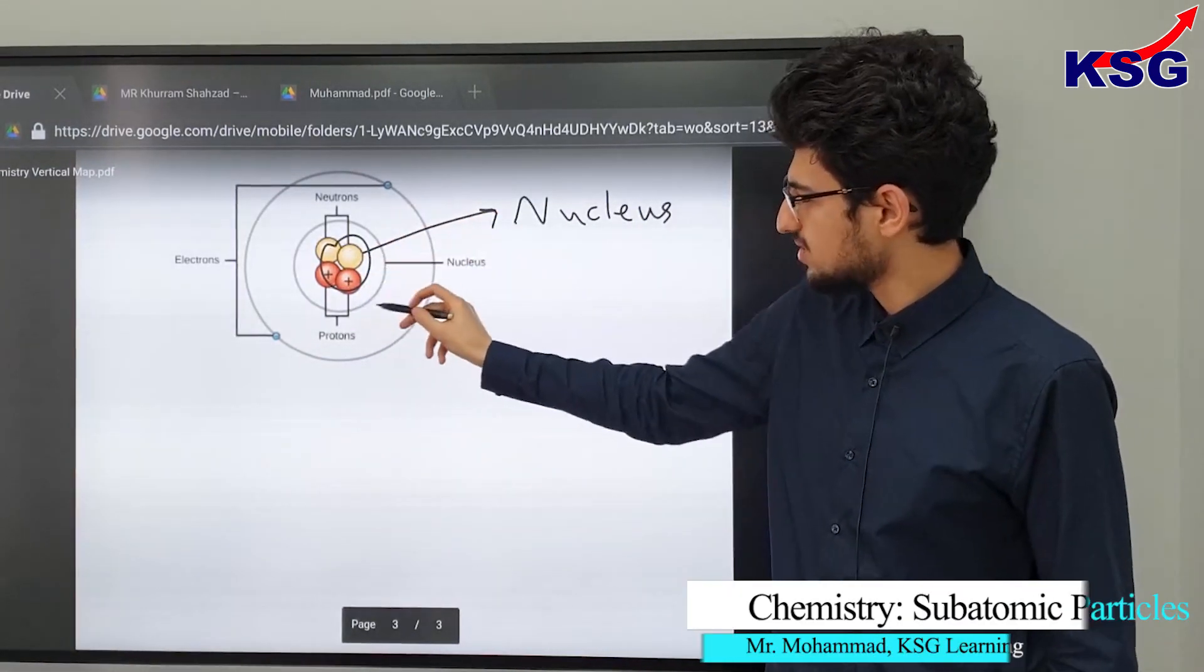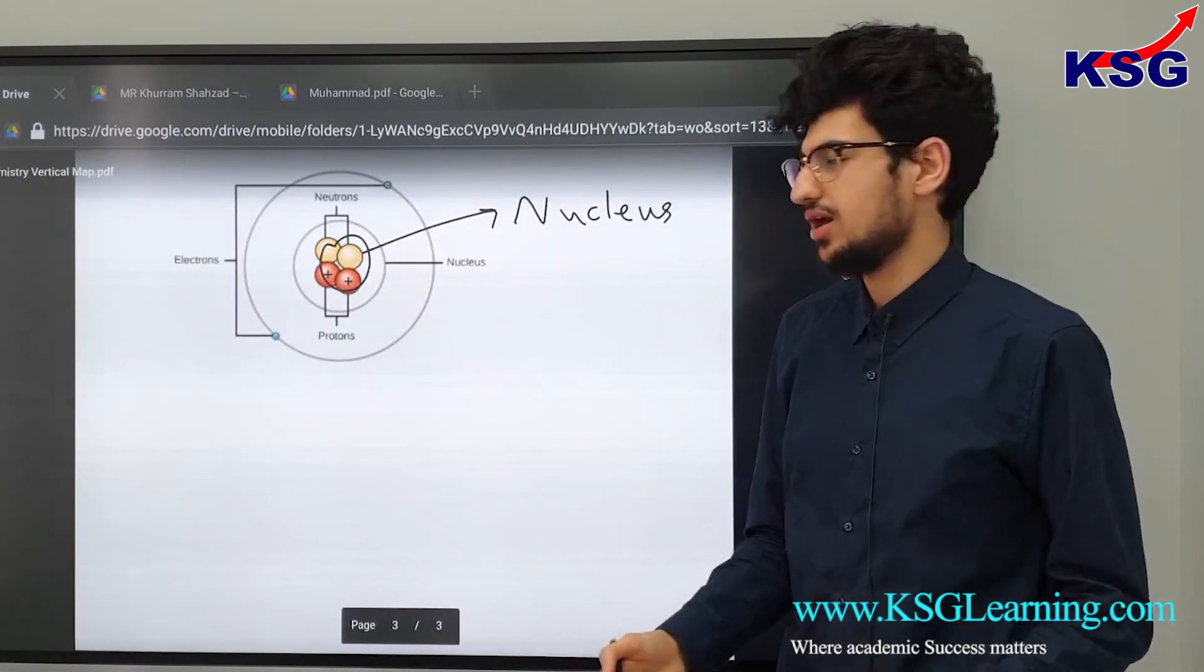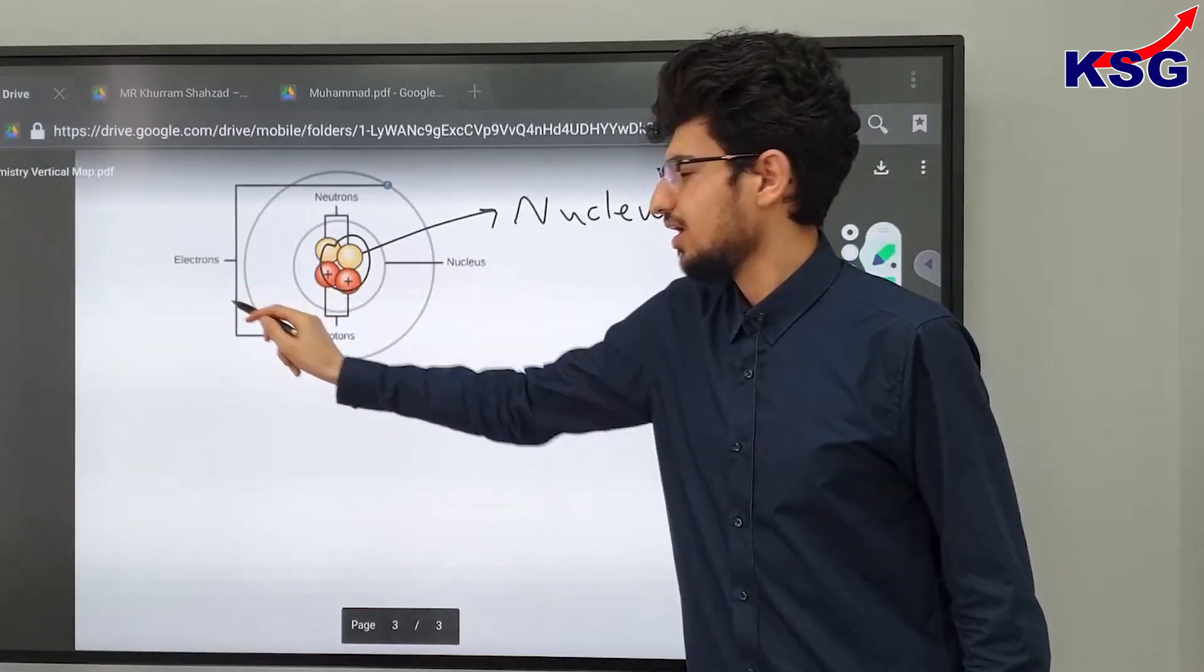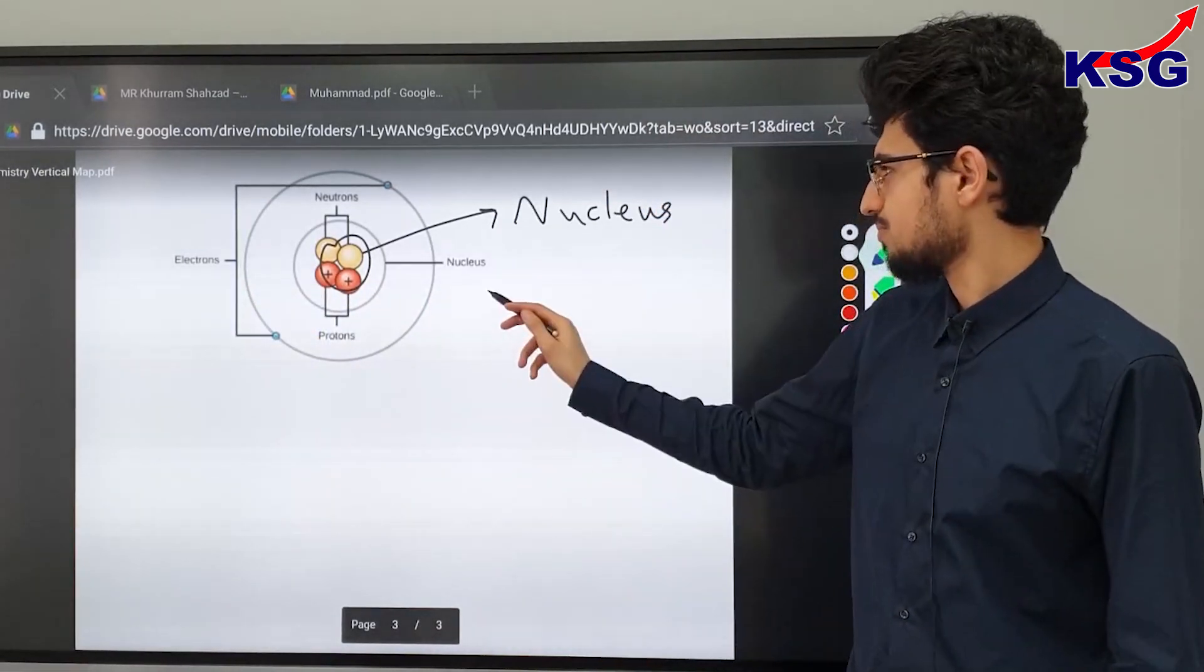And then we have orbiting it, sort of like the Moon does to the Earth, electrons. And here we can see that we have electrons.